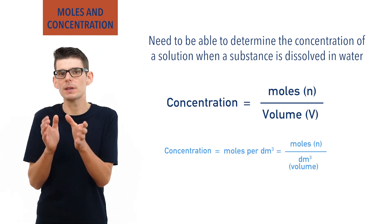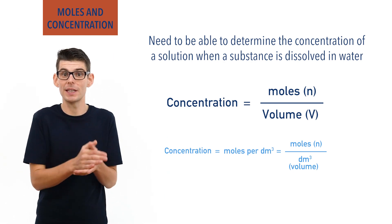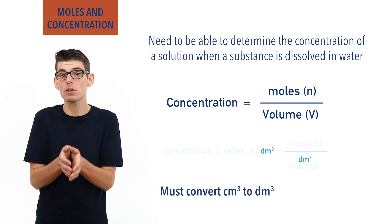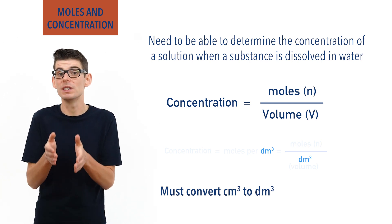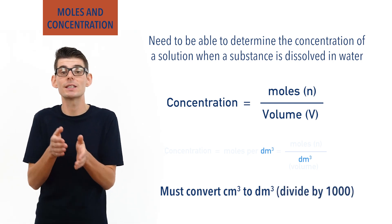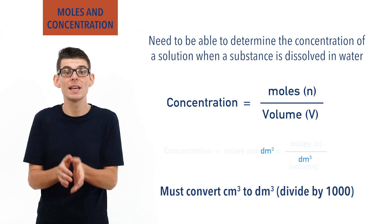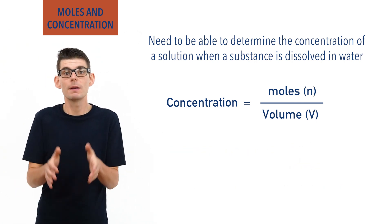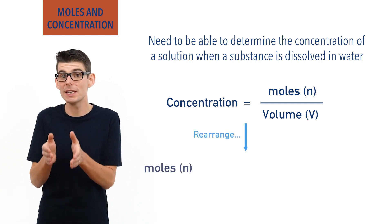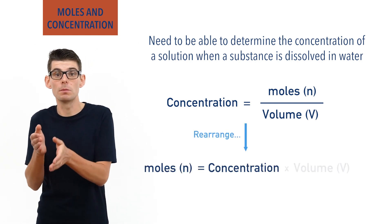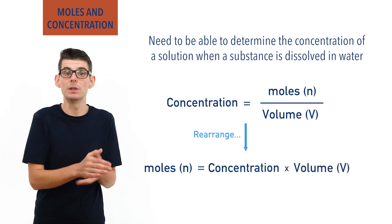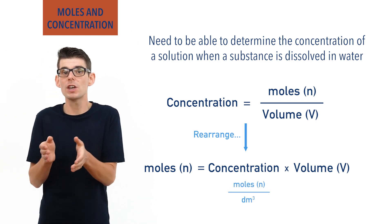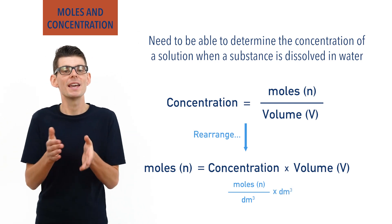One important thing to be aware of is that the units of volume used when calculating concentration must be converted into decimetres cubed. If a volume is given in centimetres cubed, divide by 1000 to convert to decimetres cubed, since 1 dm³ = 1000 cm³. This relationship can be rearranged to give: moles of solute = concentration of solution × volume of solution. If concentration = moles ÷ dm³, then concentration × dm³ = moles.